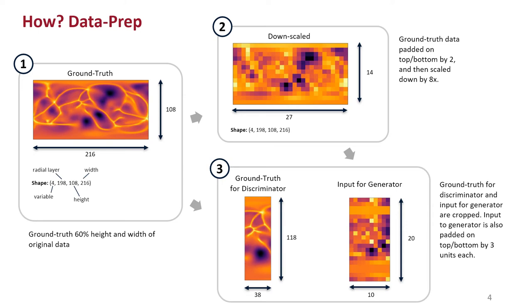I would like to highlight some of the data prep steps as this is an important part of our work. First, we take the ground truth data, which is scaled down by 40% already shown here in step one. Then we further downscale the data by eight times as shown here in step two. A slice of this data, along with some padding, is then used and becomes the input for the generator, as shown here in step three. We also use a slice of the ground truth data, which becomes the ground truth for the discriminator.